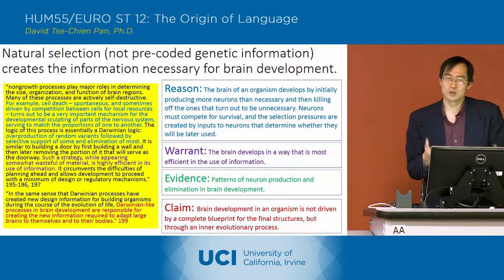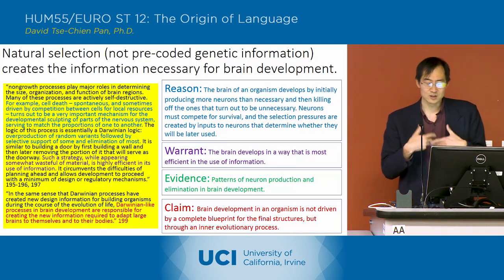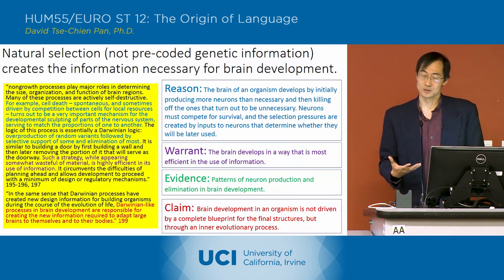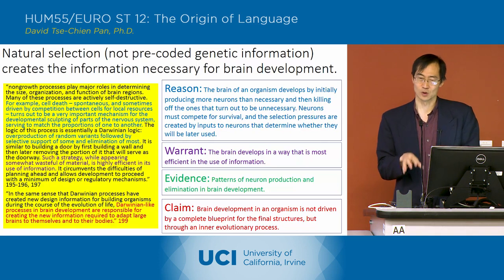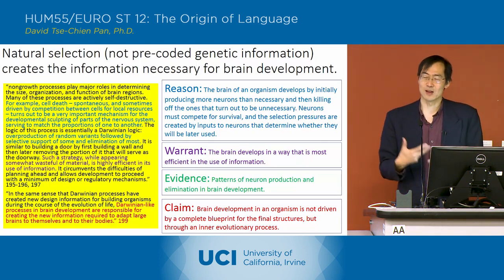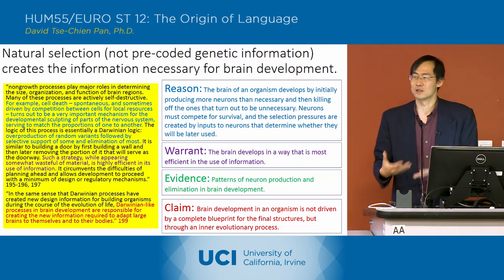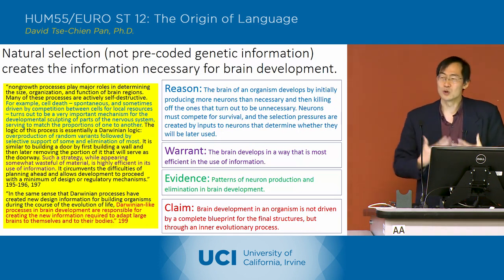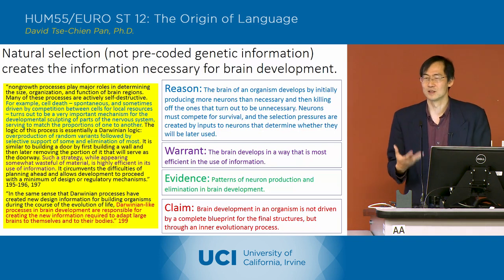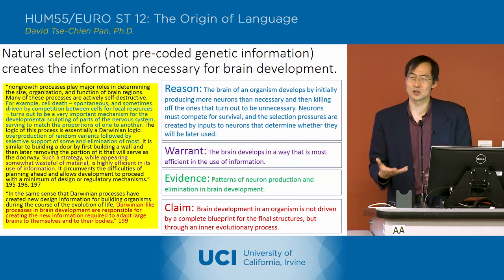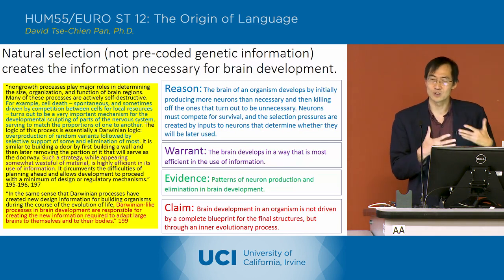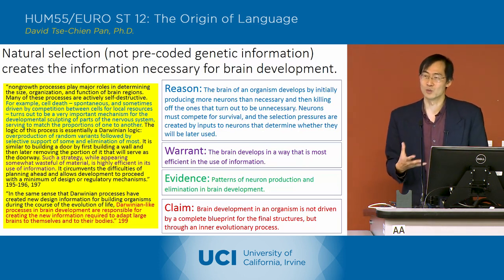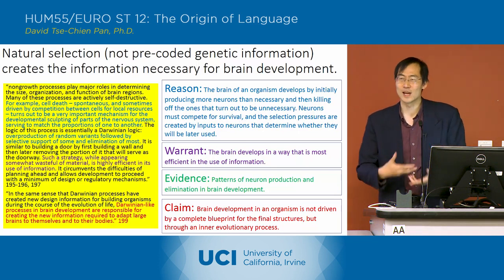Neurons that aren't used in early development will tend to die off, whereas those that are used will survive. So there's a sense in which the brain develops in a generic way for all organisms, and the specific brain structures of a specific organism are really adapted to that organism in the process of its development. The brain develops in a way that's most efficient in the use of information, even though it wastes material by creating all these neurons that are then killed off. There doesn't need to be any kind of genetic blueprint for the structure of the brain.